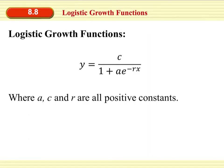So the formula for a logistic growth function looks something like this here, where we have y equals c, which is our carrying capacity, divided by 1 plus ae to the negative rx. a, c, and r are all going to be positive constants.